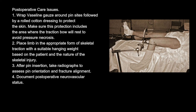Postoperative care: 1. Wrap Vaseline gauze around pin sites followed by a rolled cotton dressing to protect the skin. Make sure this protection includes the area where the traction bow will rest to avoid pressure necrosis. 2. Place limb in the appropriate form of skeletal traction with a suitable hanging weight based on the patient and the nature of the skeletal injury. 3. After pin insertion, take radiographs to assess pin orientation and fracture alignment. 4. Document postoperative neurovascular status.